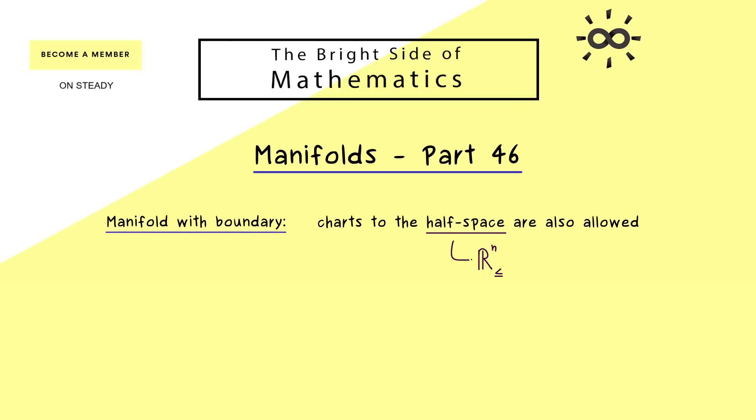And there please note, the half-space is just R^n, where the first component is not allowed to be positive. So you could say, we cut R^n into two halves and we consider the left-hand side.